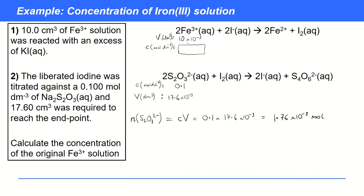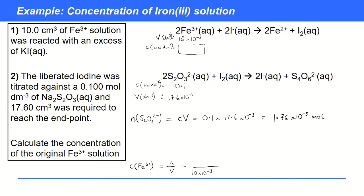The next step is to link that to the number of moles of iron, because if we can work out moles of iron, we can use the formula in reverse to find concentration. Eventually we want concentration of Fe³⁺ = moles ÷ volume. We have the volume, and we need the moles. Currently we don't know the moles, so we need to work that out — which is what comes next.